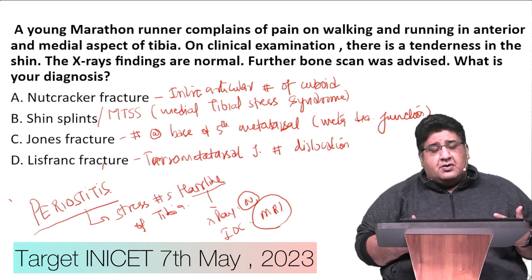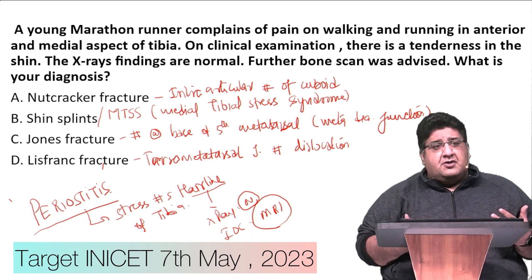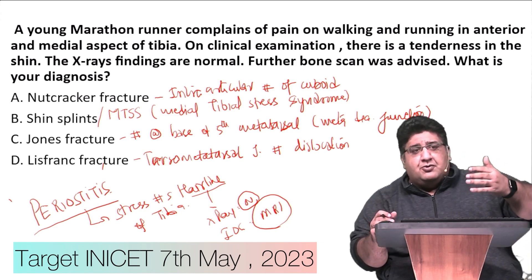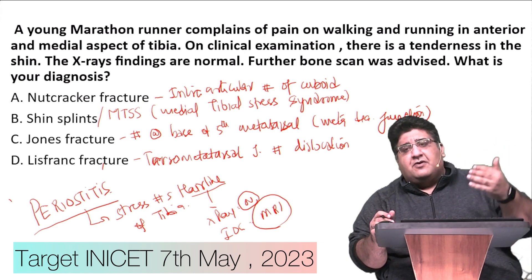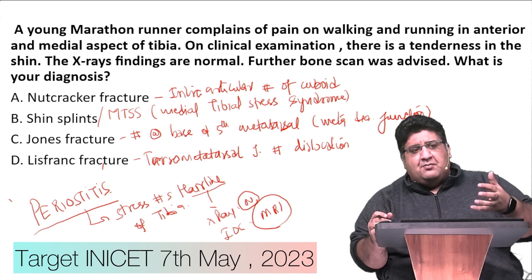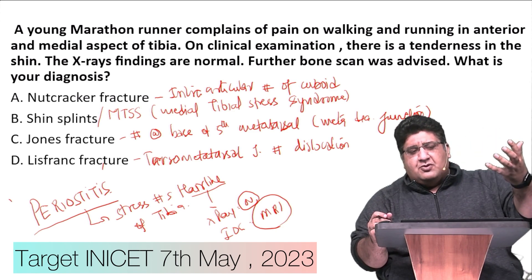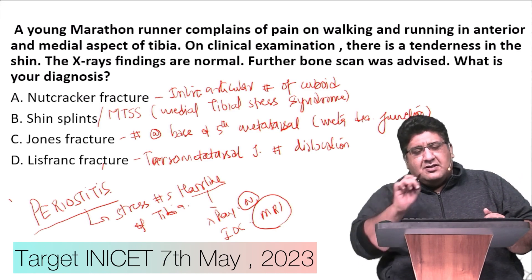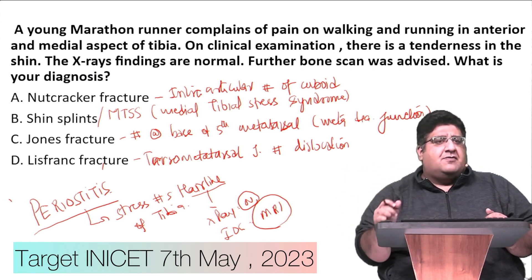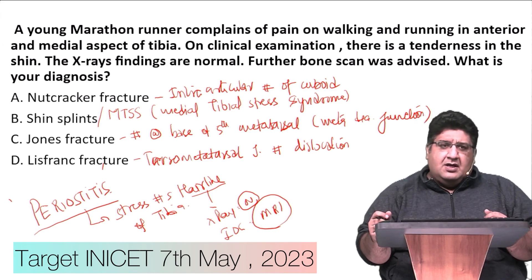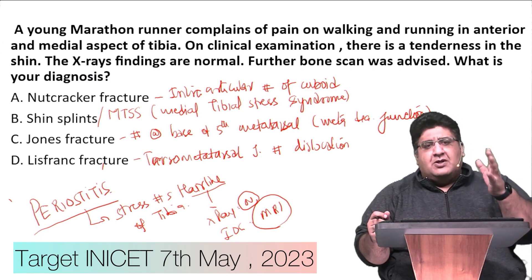Initial cold packs are very important, and strengthening of the muscles - including the calf - is very important. The pain pattern is classical: you start running and within three to four minutes you start feeling pain; as you run further the pain reaches its topmost intensity, then as you gradually cool down, the pain subsides. This cyclical pain pattern is classical of MTSS or shin splints. Investigation of choice is MRI; treatment is rest, cold packs, and let it heal.